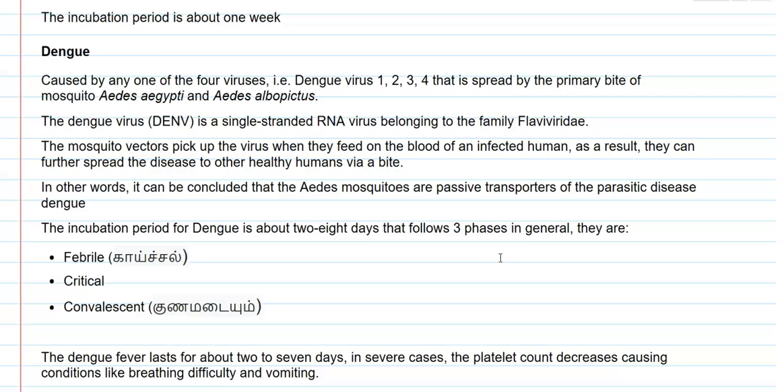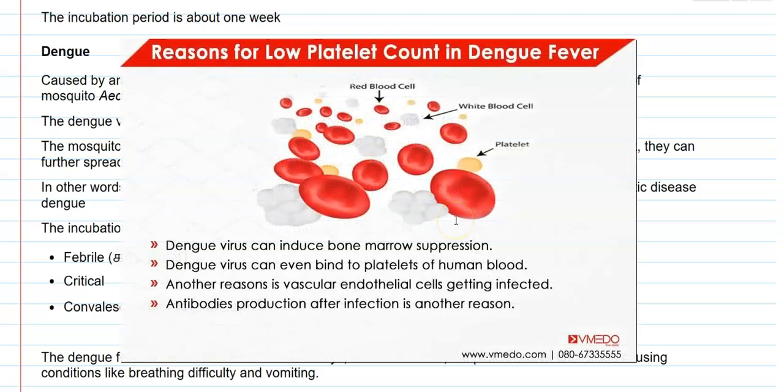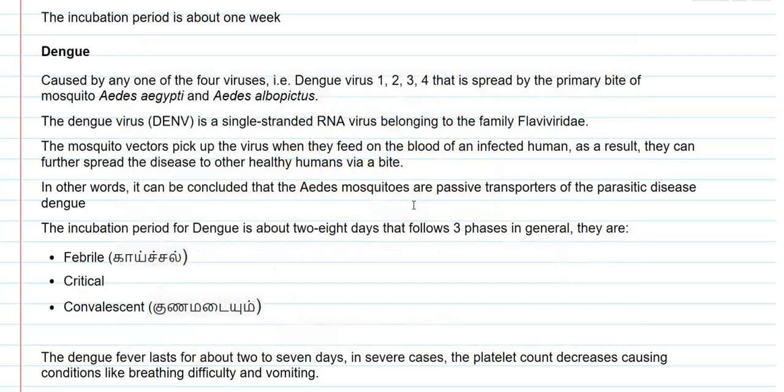In other words, Aedes mosquitoes are passive transporters of this parasitic disease, Dengue, from one person to another. The incubation period of Dengue disease is from 2 to 8 days, and it follows three phases: the febrile phase, the critical phase, and the convalescent phase. The Dengue fever lasts for 2 to 7 days in severe cases, during which the blood platelet count decreases, leading to difficulty in breathing and vomiting as common symptoms.